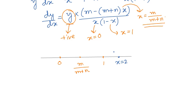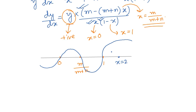At x = 2, the numerator factor becomes negative, x is positive, and (1-x) is negative, making dy/dx overall positive. So the wavy curve starts above the x-axis for x > 1: positive, then negative between m/(m+n) and 1, then positive between 0 and m/(m+n), then negative for x < 0.